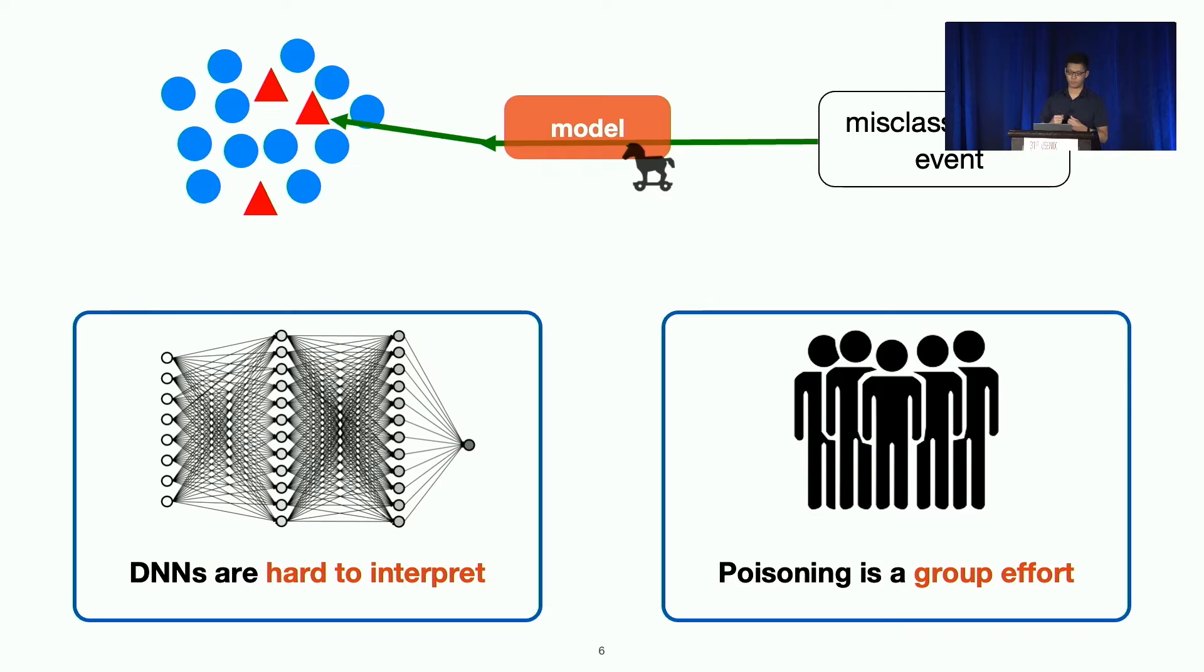Adding on top of that, for most of the cases, poisoning is also a group effort. That means we must find a sufficient amount of poison data before we can reason about whether this set of poison data caused the misclassification. Because most of the time, they need to work together to do this.